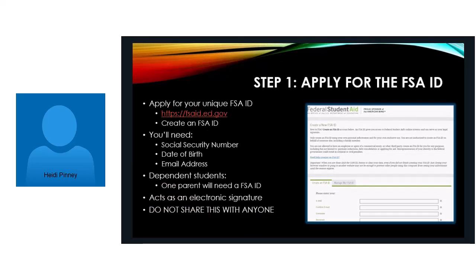So the first thing — your very first step — is that you want to apply for the FSA ID. The FSA ID stands for the Federal Student Aid ID, and it's unique to every individual. In order to apply for your unique FSA ID, you're going to go to fsaid.ed.gov and click on Create FSA ID.